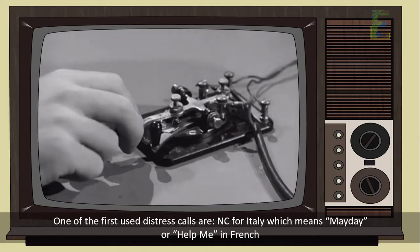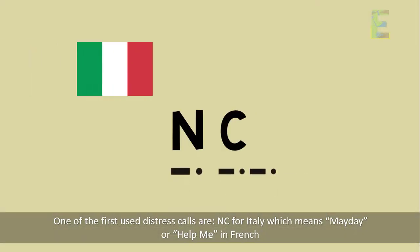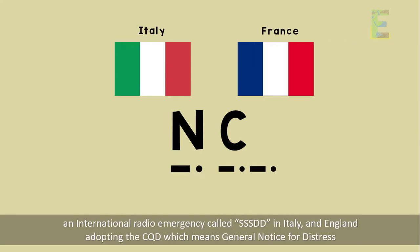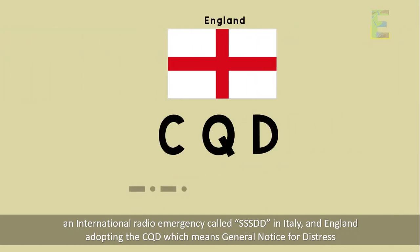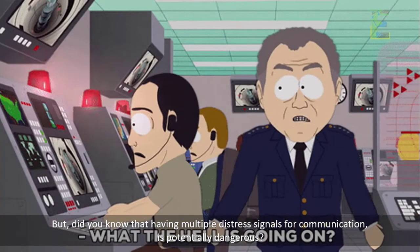One of the first used distress calls are NC for Italy, which means May Day or Help Me in French, an international radio emergency called SSSDD in Italy, and England adopting the CQD, which means General Notice for Distress. But did you know that having multiple distress signals for communication is potentially dangerous?